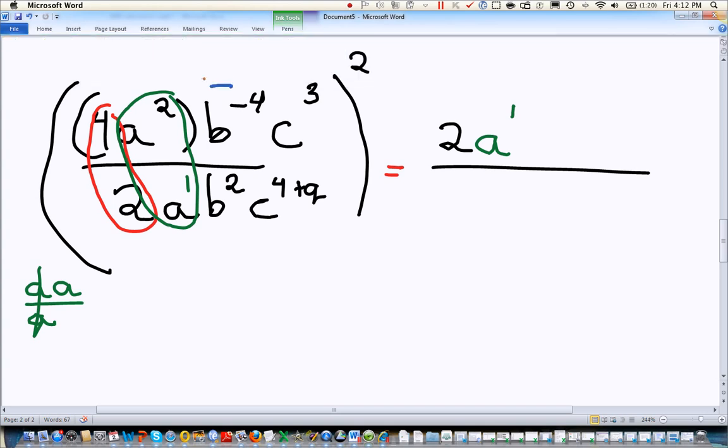Second, we're going to look at the B's. And you've got to be careful because there's a negative sign with that B. B minus 4 minus 2. So if we were to write that down, minus 4 minus 2, we'd have negative 6 of them. And we'll deal with that negative in just a minute.